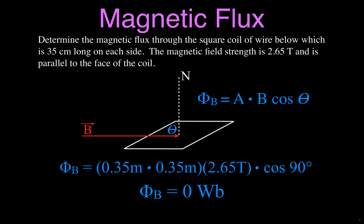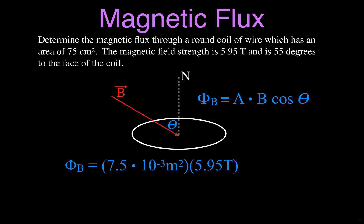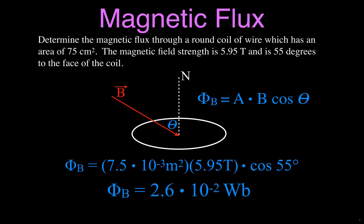For the last example, we have a round coil of wire with an area of 75 centimeters squared. The magnetic field has a given strength and comes in at 55 degrees. When converting 75 cm² to meters squared, you can't just move the decimal — it's a two-dimensional surface, so you divide by 10,000, giving 7.5 × 10⁻³ m². With the angle at 55 degrees, multiplying everything together gives a magnetic flux of 2.6 × 10⁻² Webers.